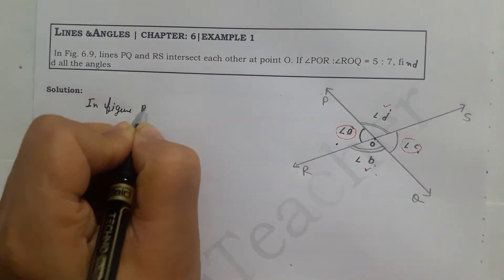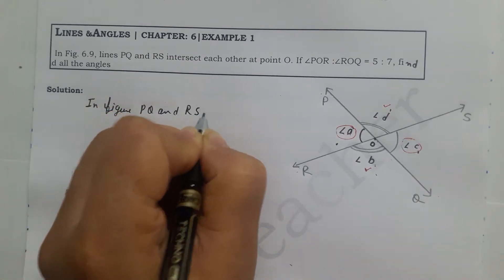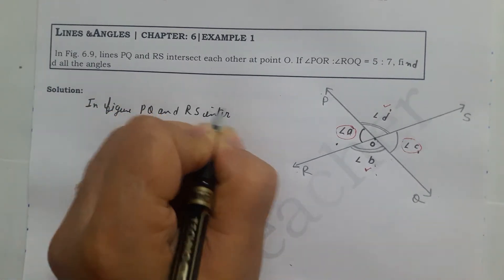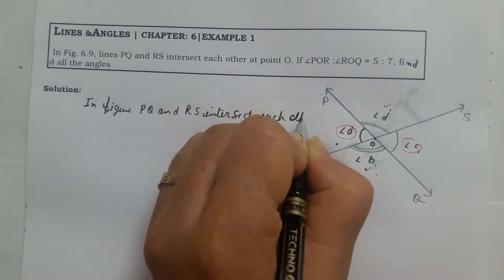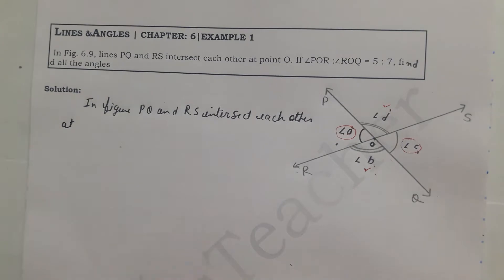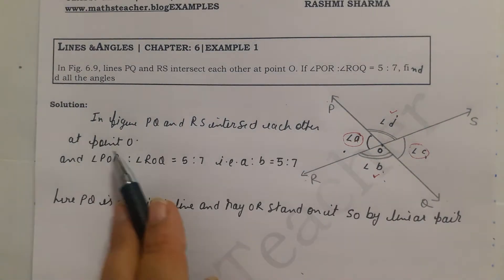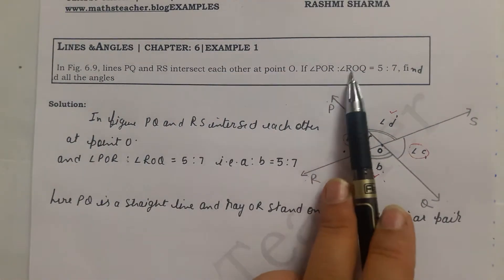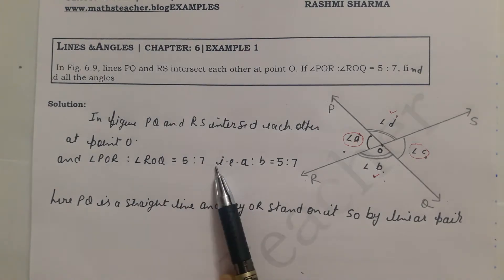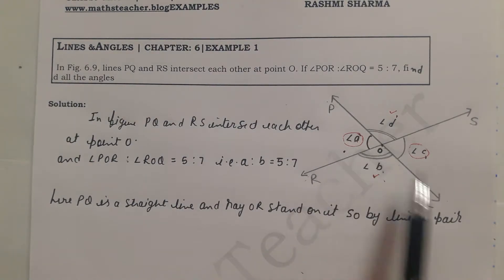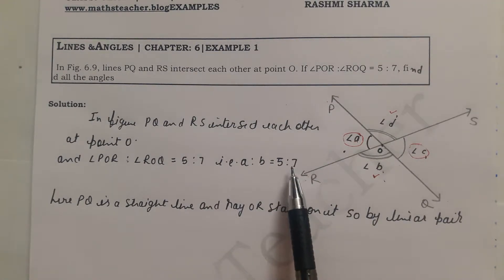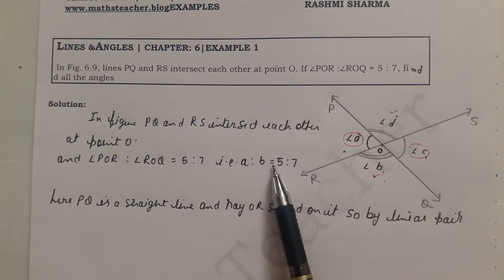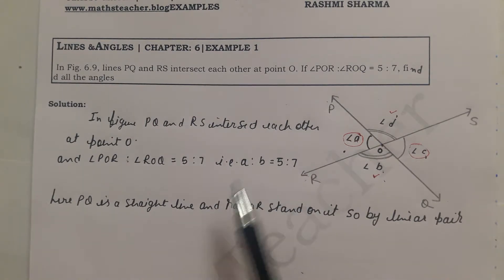In the figure, PQ and RS intersect each other at point O, and angle POR to angle ROQ is given as 5 to 7. I have taken angle POR as A and angle ROQ as B. So the ratio of A to B is 5 to 7. We know the ratio of A and B, and we need to find how much A and B together make.